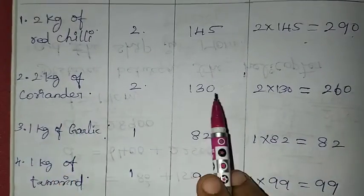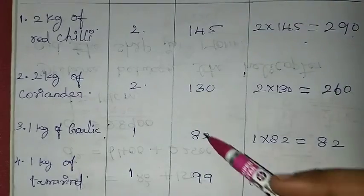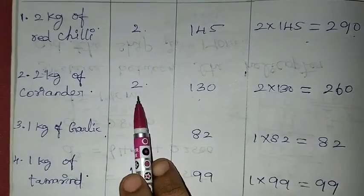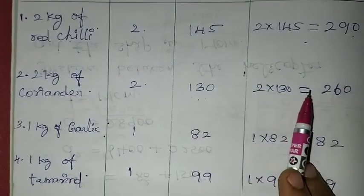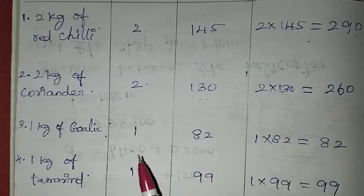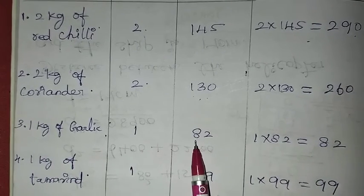1kg of coriander is Rs.130, so 2kg is 2 into 130, which is nothing but Rs.260. 1kg of garlic is Rs.82.